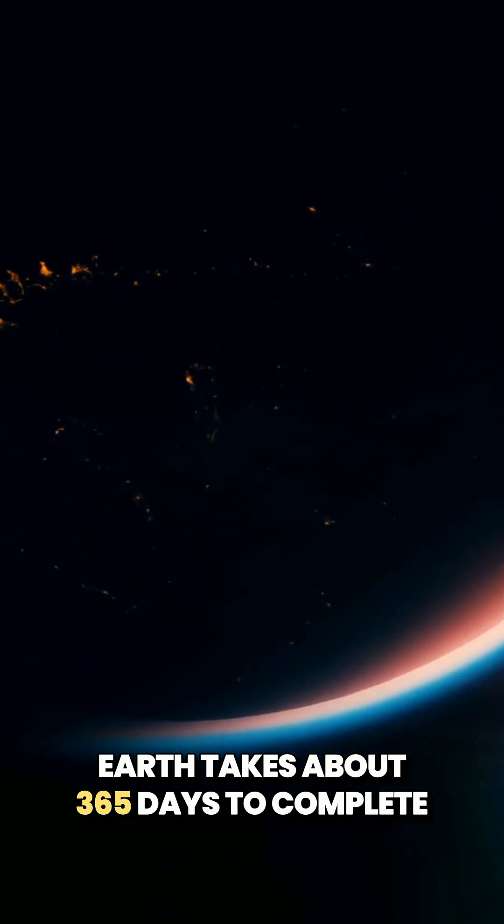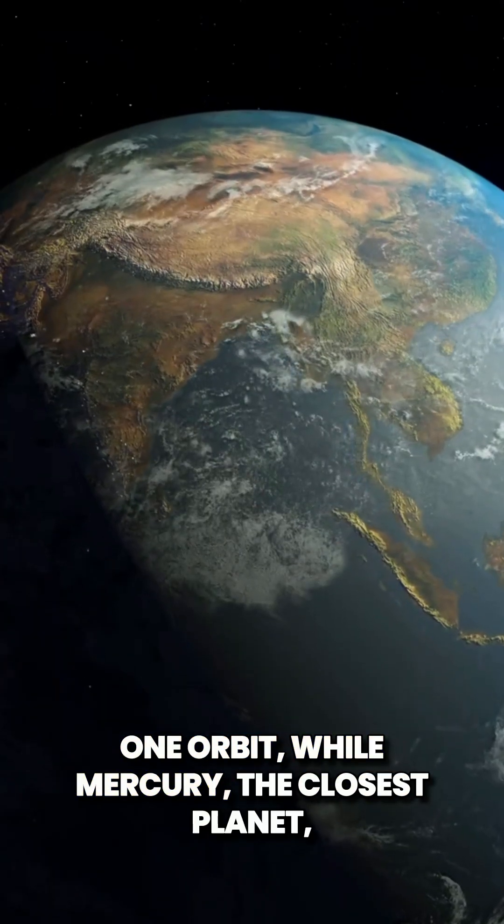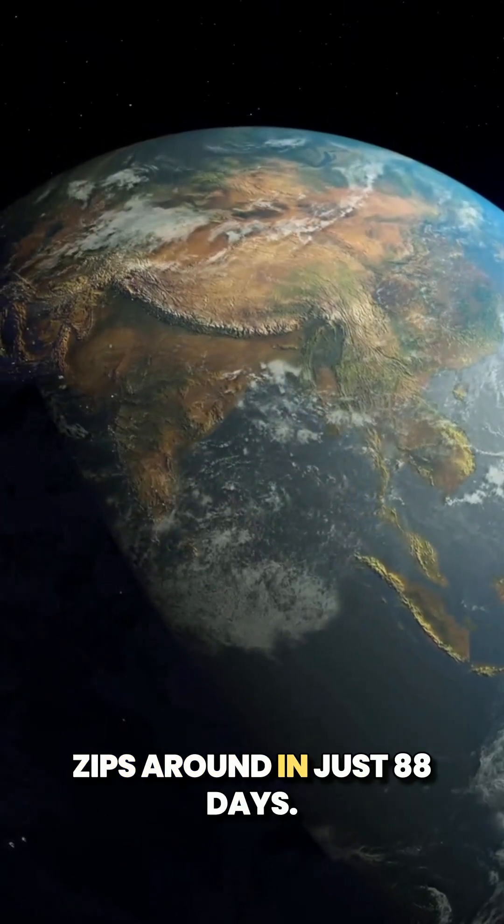Earth takes about 365 days to complete one orbit, while Mercury, the closest planet, zips around in just 88 days.